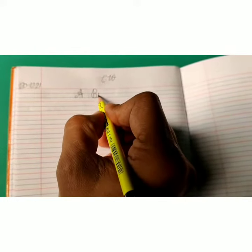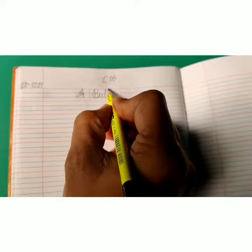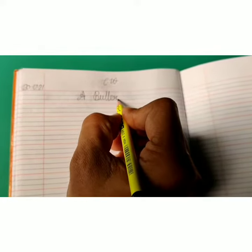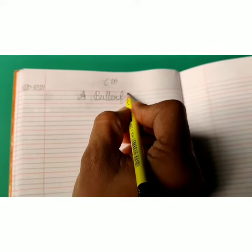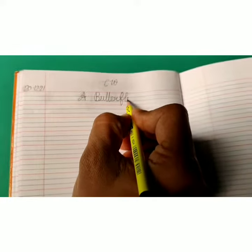Now write down heading capital A, one finger space capital B, U, double T, E, R, F, L, Y - butterfly, a butterfly.